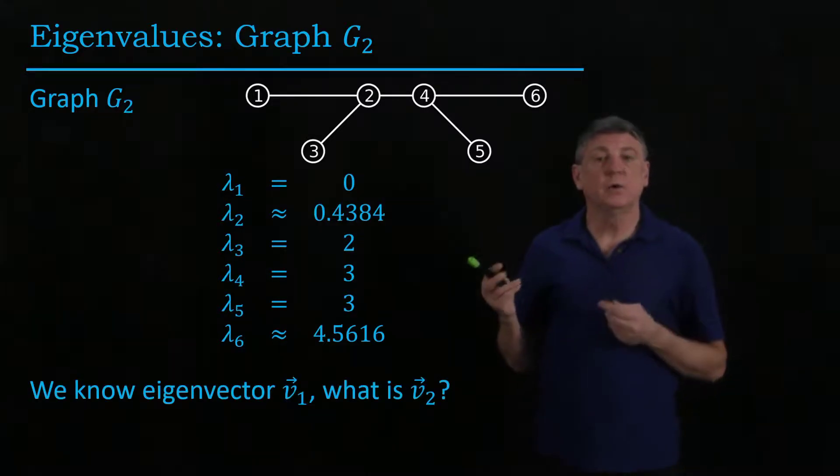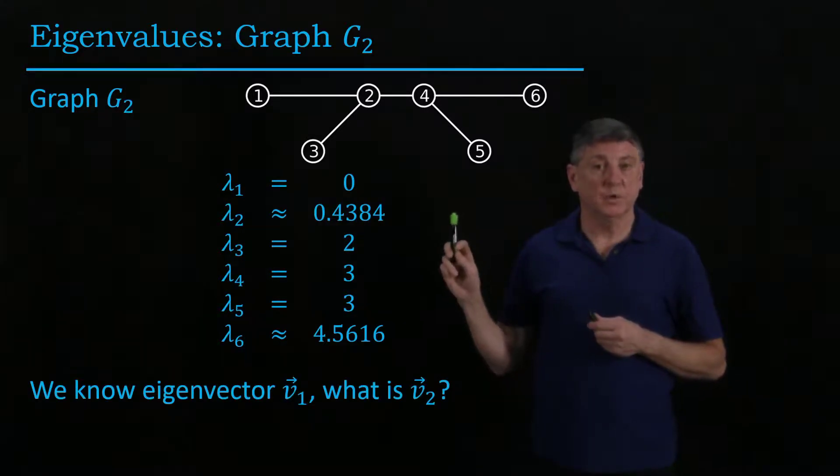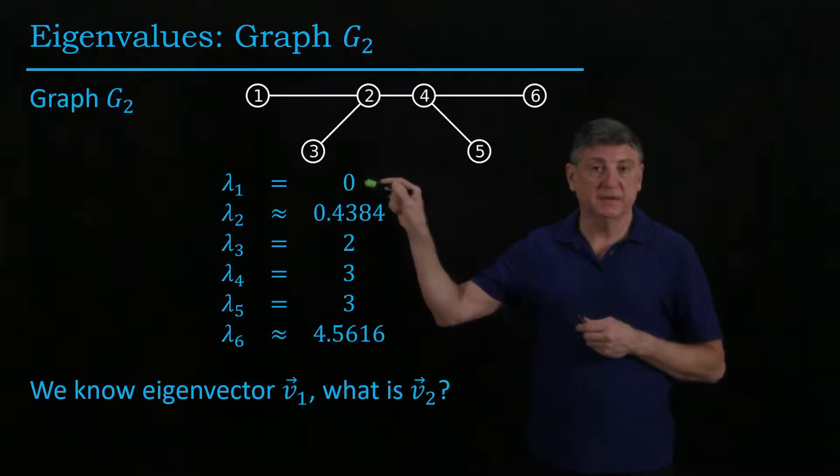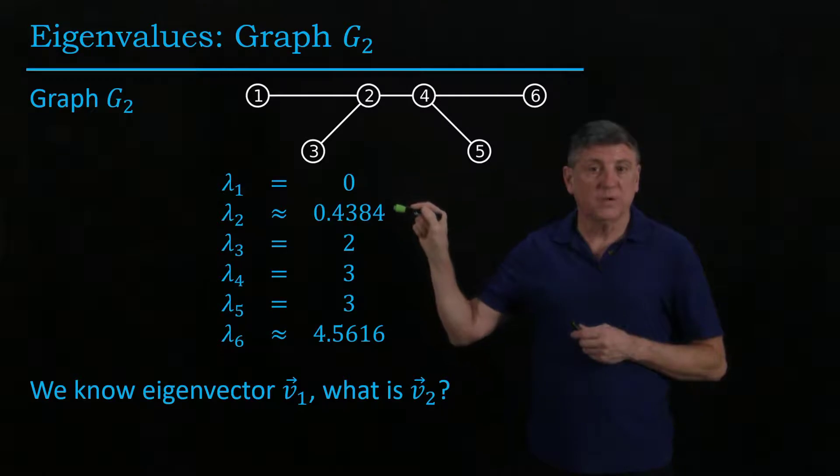And we already know what eigenvalue, eigenvector one is. That is, the eigenvector for this is the ones vector. The question is, what's the eigenvector for this eigenvalue?